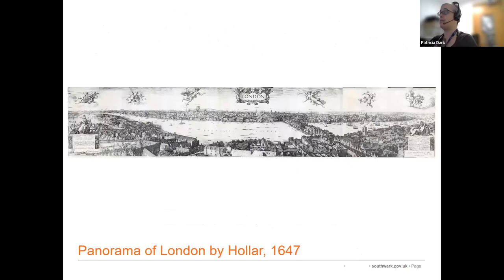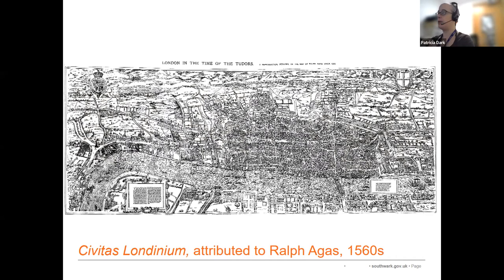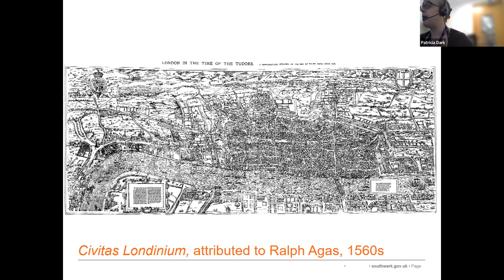This panorama by Wenceslas Hollar, published in 1647, is notable because it shows the view from a single point — the tower of St Mary Overy, or as we know it, Southwark Cathedral. Hollar completed the sketches he worked this panorama from between 1636 and 1642. This map, commonly attributed to Ralph Agas and otherwise known as the Woodcut Map, survives in three copies dating to circa 1633. However, internal details make it clear that these were copies of an original made in the 1560s. It doesn't include much of the modern borough, but it does include the bull and bear-baiting rings in Bankside, London Bridge, and St Mary Overy Church.